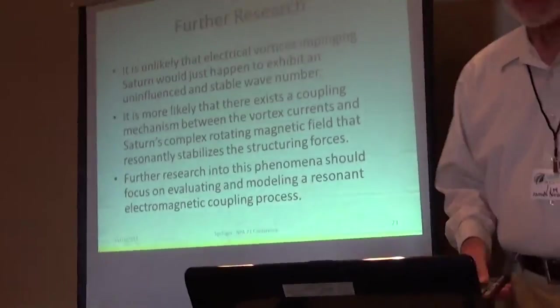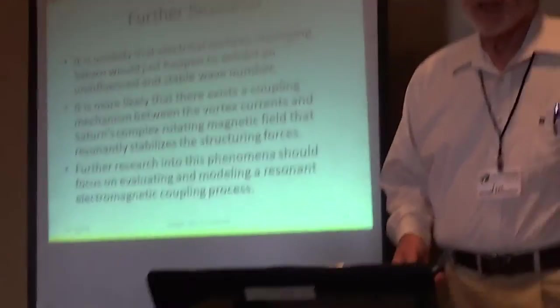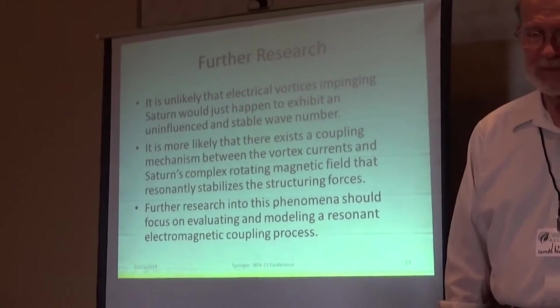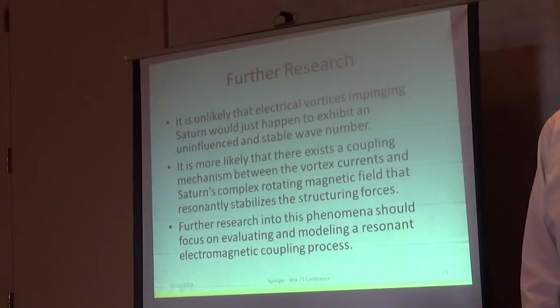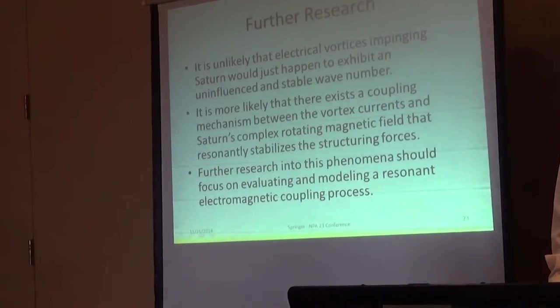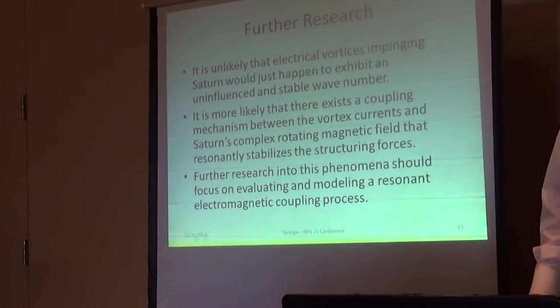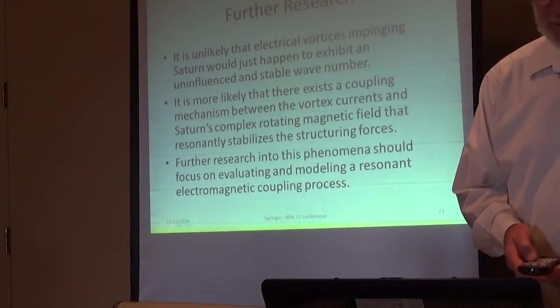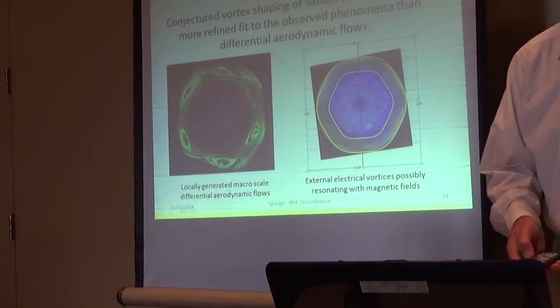So the top, he says, it's unlikely that the electric force impinging on Saturn would just happen to exhibit a stable wave number. It's more likely there's an existing coupling mechanism. That's the next step, is to find that coupling mechanism, which is basically some theoretical physics.